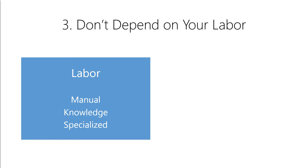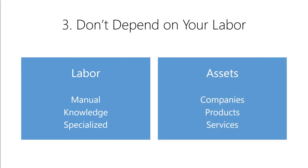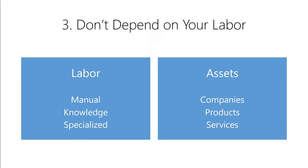Third, don't depend solely on your labor for income. Your labor is going to become progressively less valuable as we automate more jobs. This includes manual labor, knowledge work, and even highly specialized labor. Instead, you need to begin putting your money into wealth-generating assets. These include investing in companies, selling your own products, or providing automated services. Your labor can only make you money while you're working, so most people are only making money roughly eight hours a day. However, wealth-generating assets can make you money 24 hours a day. So those that invest in wealth-generating assets are essentially making money even while they sleep.